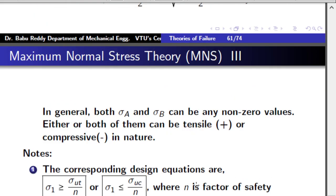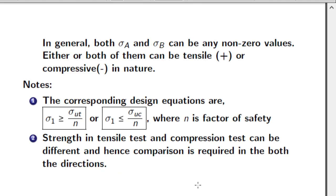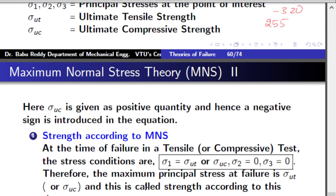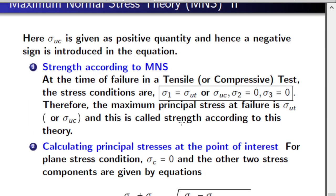If you want to use a design equation, you replace the ultimate tensile strength with sigma_ut divided by n (factor of safety), and the ultimate compressive strength with sigma_uc divided by n. Strength here means either ultimate tensile strength or ultimate compressive strength. When you are doing a 2D stress case, be careful to remember that the out-of-plane principal stress sigma_c should not be neglected.